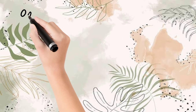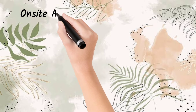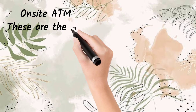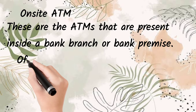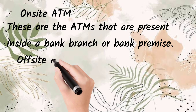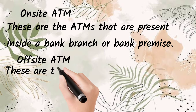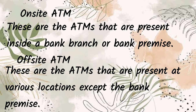First, we have on-site ATM. These are the ATMs that are present inside a bank branch or bank premises. Off-site ATMs, on the other hand, are ATMs which are located in any location but not within the premises of the bank.